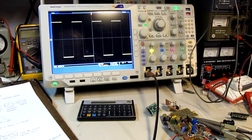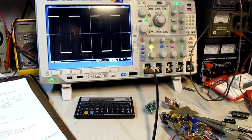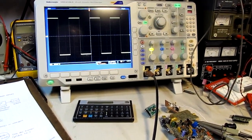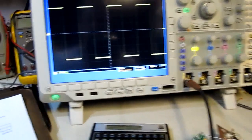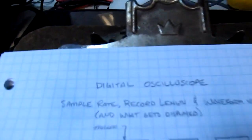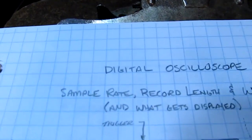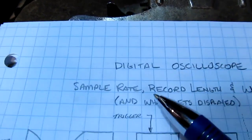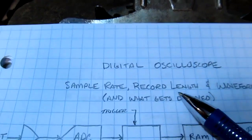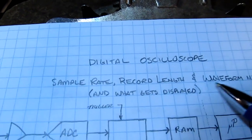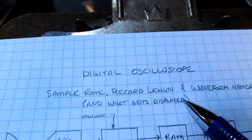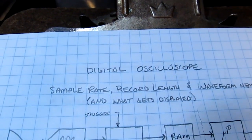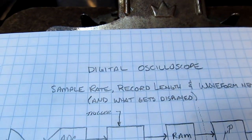In this video we're going to take a look at sample processing in a typical digital oscilloscope. More specifically we're going to look at sample rate, record length, waveform memory, and what gets displayed on the oscilloscope screen.